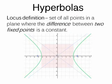This movie is designed to give you an introduction to hyperbolas. Let's start with the locus definition of a hyperbola. The hyperbola is the set of all points in a plane where the difference between two fixed points is a constant. This is very similar to the definition of an ellipse that we've already studied. However, an ellipse is the sum of the distances rather than the difference.